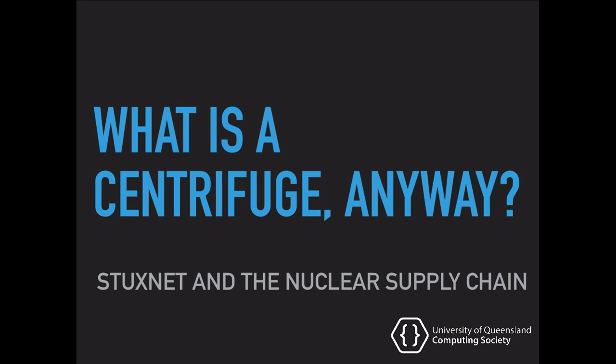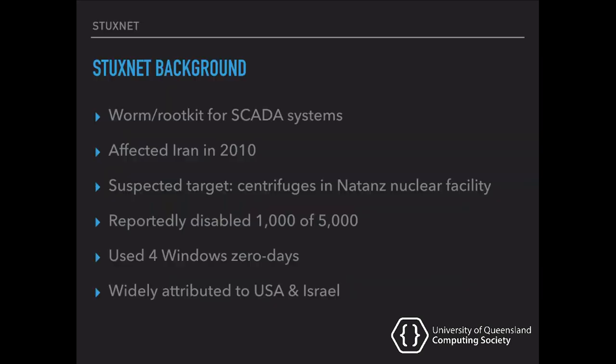This talk today is going to be about Stuxnet. Now for those of you who aren't familiar with it, it was a worm embedding a rootkit for SCADA systems. It became extremely relevant in 2010 when Iran came out and said that their nuclear program, their centrifuges, had been attacked by this worm. It was pretty big news at the time. The suspected target was the centrifuges in the Natanz nuclear facility in Iran, and it reportedly disabled about 1,000 out of the 5,000 they had there. This particular virus used four zero days in Microsoft Windows.